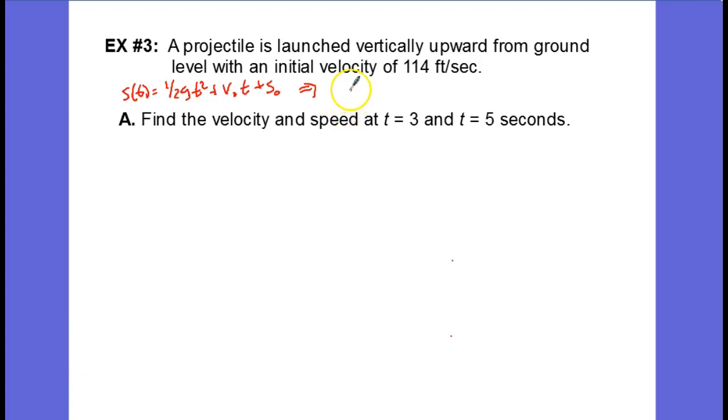s(t) equals one-half times negative 32 feet per second squared, gives us negative 16 feet per second squared times t squared, plus the initial velocity of 114 feet per second times t. Since it was launched from the ground, that means s naught was equal to zero.